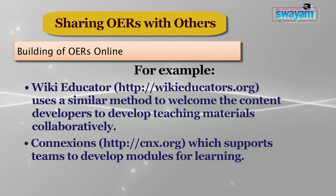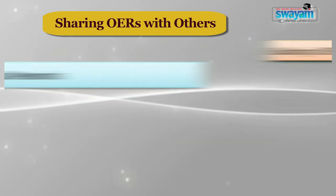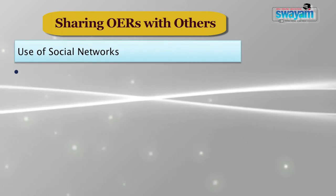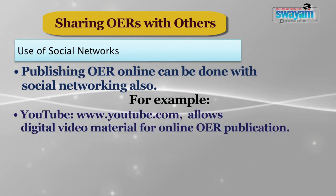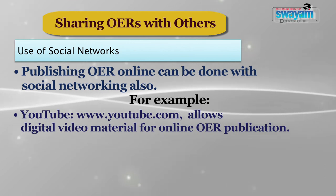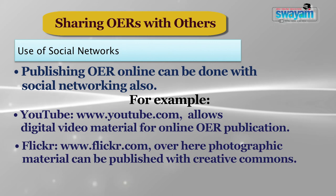Another option is connections which support teams to develop modules for learning. Third is exploitation of social networks — publishing open educational resources online can be done with social networking sites. For example, YouTube allows digital video material for online OER publication, and Flickr allows photographic material to be published with Creative Commons. In using or adapting open educational resources, users in most situations have enough freedom to adapt OERs in accordance with their language or cultural context where the license allows it. However, in cases where the license restricts adaptation under Creative Commons with no-derivatives licensing, the users may not alter it and it has to be used as-is.